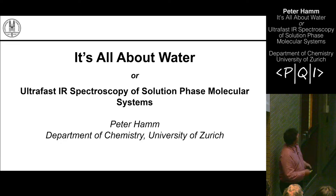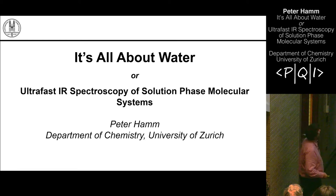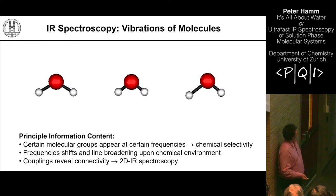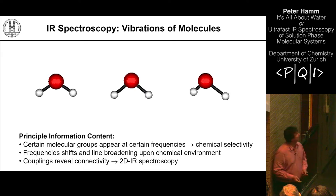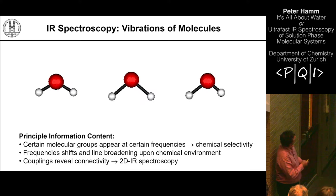Our core expertise is Ultrafast Infrared Spectroscopy. I don't have to go too deep with this audience, but this is showing the three normal modes of water — how the atoms vibrate. The point I want to make is that vibration spectroscopy is useful for molecular science because we get a lot of information out of infrared spectra. Certain molecular groups appear in certain frequency ranges — we have chemical selectivity.